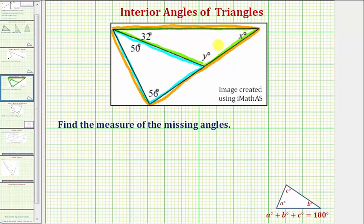If we focus on the large triangle, we can determine the measure of angle x by using the fact that the sum of the interior angles of any triangle is equal to 180 degrees. So again, focusing on the large triangle, the sum of this angle, this angle, and this angle must be 180 degrees. So writing an equation, we would have x plus 56, plus for this third angle, we'd have the sum of 50 and 32.